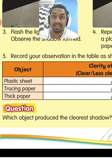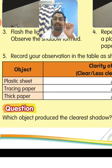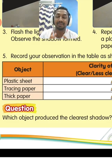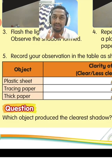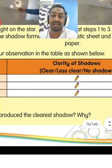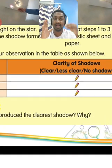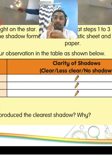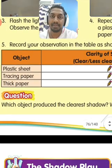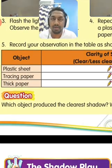Tracing paper is a translucent object. Translucent object allows some of the light to pass through it. So the clarity of shadow produced by the tracing paper will be less clear, because it allows some light to pass through it and some of the light didn't pass through it.